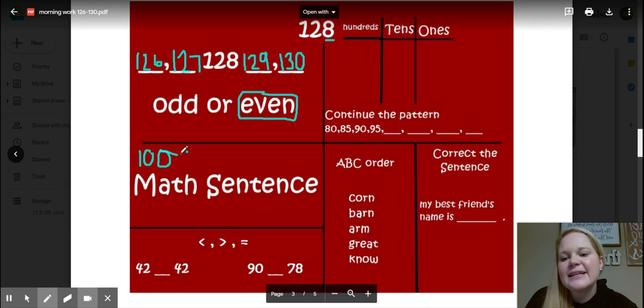Just going to make that easy for us, so we have 100 plus 20 plus 8 equals 128. And you probably noticed something was different about your morning work today—our hundreds, tens, and ones moved to the other side. We have some new stuff today.